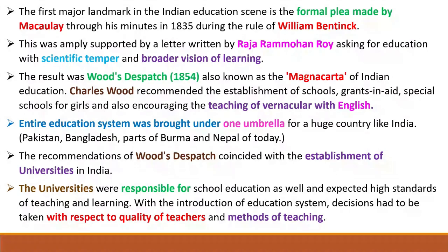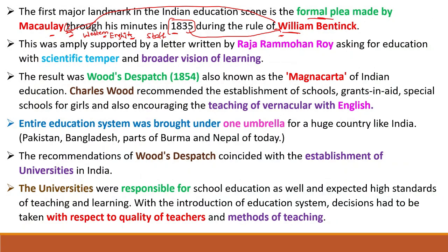The first major landmark in Indian education was the formal plea made by Macaulay through his Minutes in 1835, during the rule of Governor General William Bentinck. Bentinck ordered Thomas Bobbington Macaulay to prepare a report on the English education system. In his report, Macaulay mentioned that Western — that is, English — education should be introduced in India, to prepare Indians as intermediaries between the English rulers and the Indian masses.